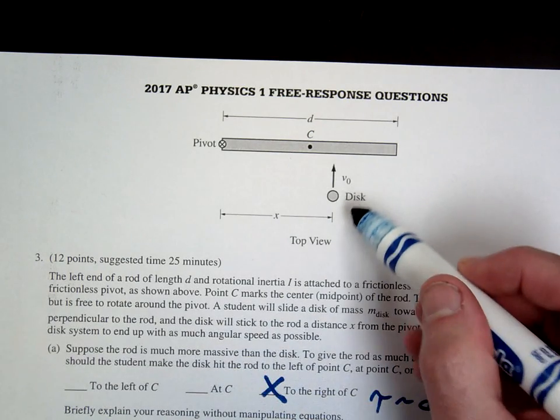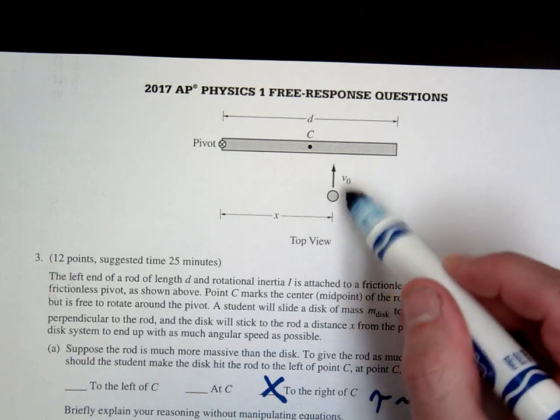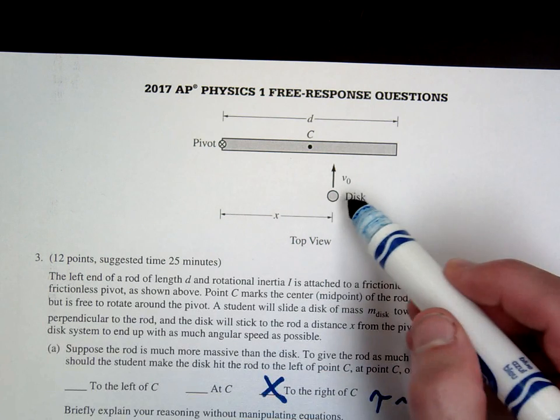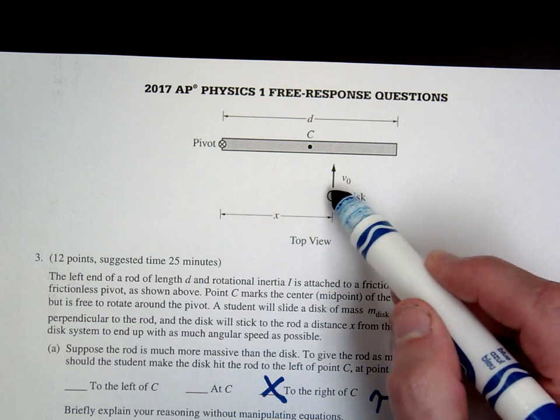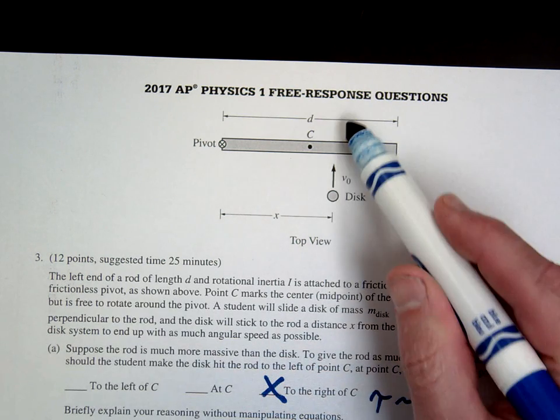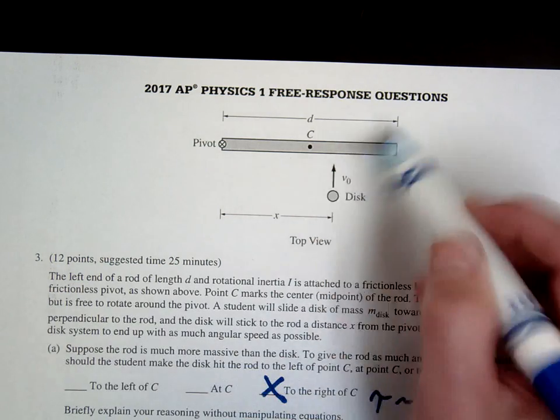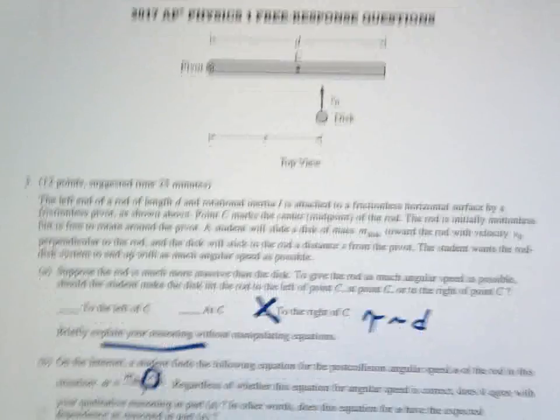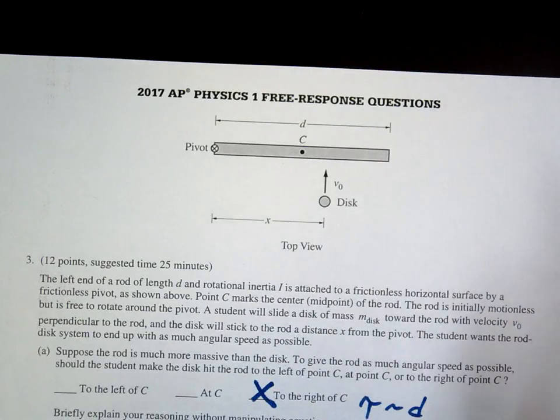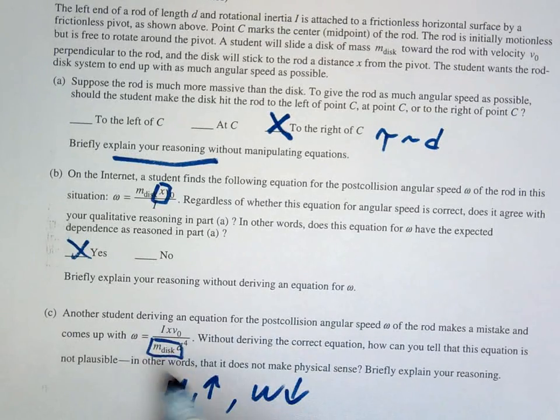If the disk has a larger mass, imagine like this was a penny versus a dumbbell. If you were to send a dumbbell in here, it's going to have more momentum to start with. And therefore, it should have more momentum to end with. And therefore, it would have a greater angular velocity. So that's one way you can go about, talk about the mass of the disk.